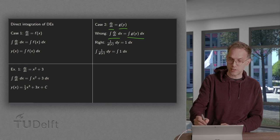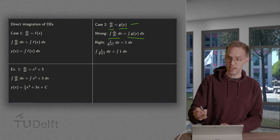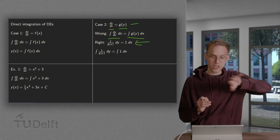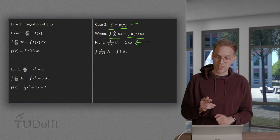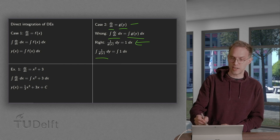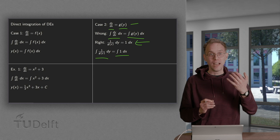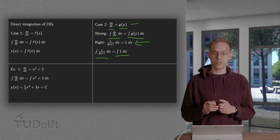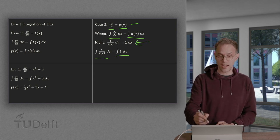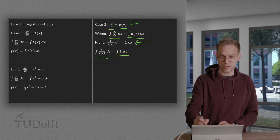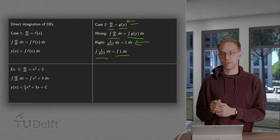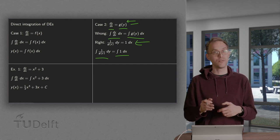We can divide both sides by g(y) and multiply with dx, which gives us this expression. We have separated all y's to the left and all x's to the right. Then we put an integral sign in front: the integral of 1/g(y) dy equals the integral of 1 dx. Now we are fine, because g(y) is given in an explicit problem so we can compute the left-hand side, and the right-hand side just integrates 1 with respect to x, giving us x.